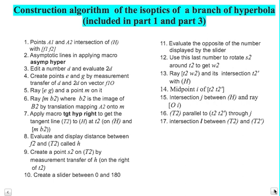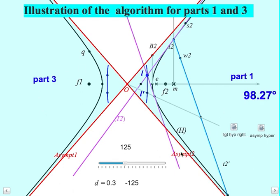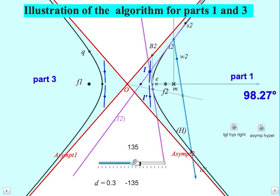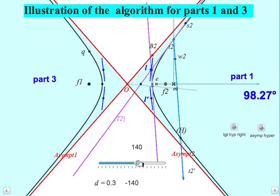So here is the construction algorithm for the isoptics included in part one and three. And here is the construction, the figure corresponding to the previous step of construction. And you see if you change this, you have the part which is not complete here because of the accuracy of the software.